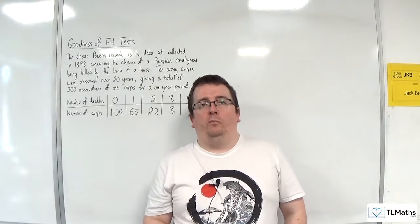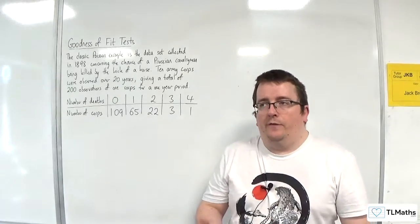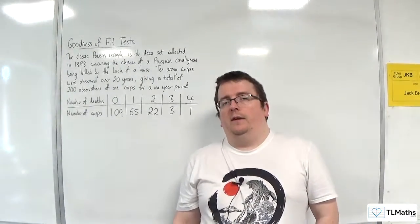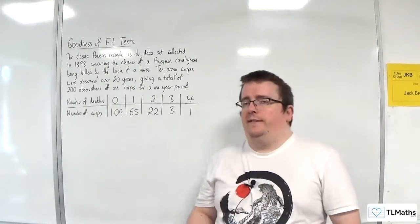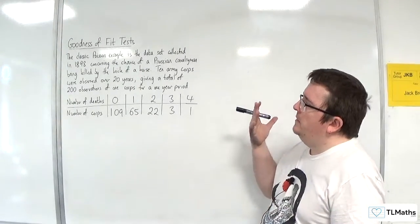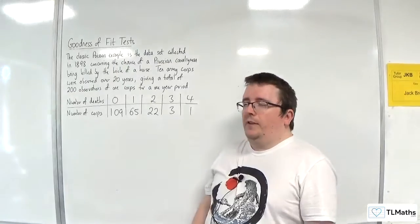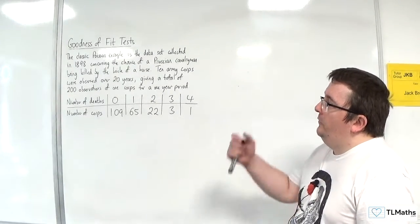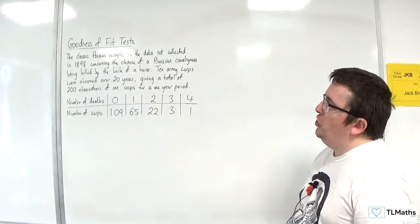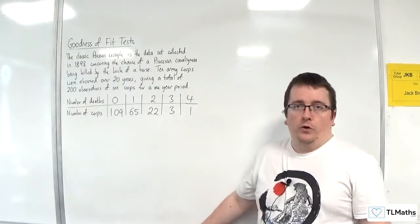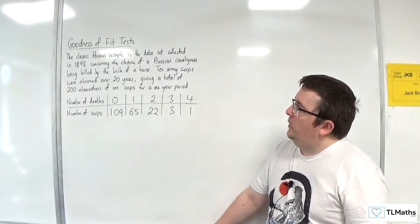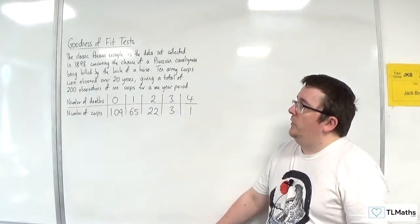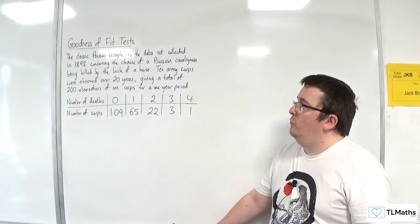In this video, I want to explore what happens if the chi-squared statistic that you calculate is actually very small. We're going to do that by investigating a data set that was published in 1898, the classic Poisson example. A bit morbid, but it concerns the chance of a Prussian cavalryman being killed by the kick of a horse. There were 10 army corps observed over 20 years, giving a total of 200 observations of one corps for a one-year period.